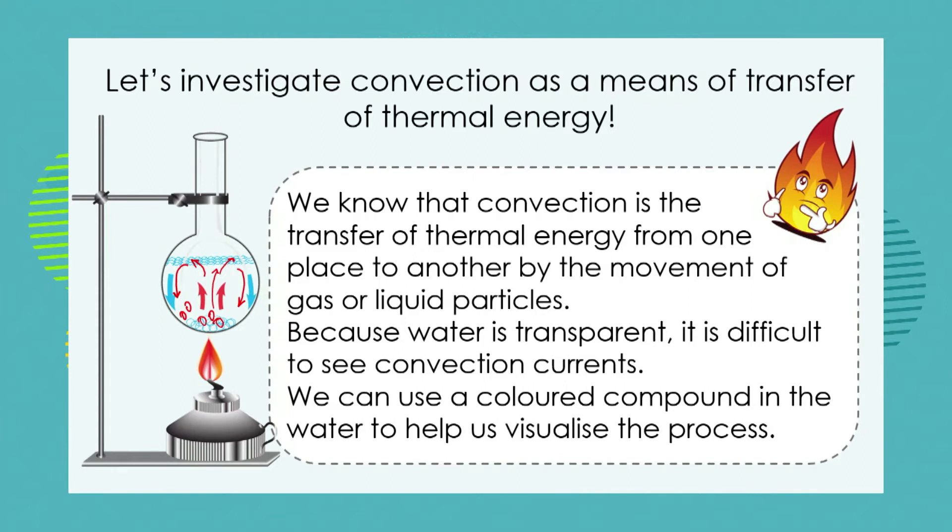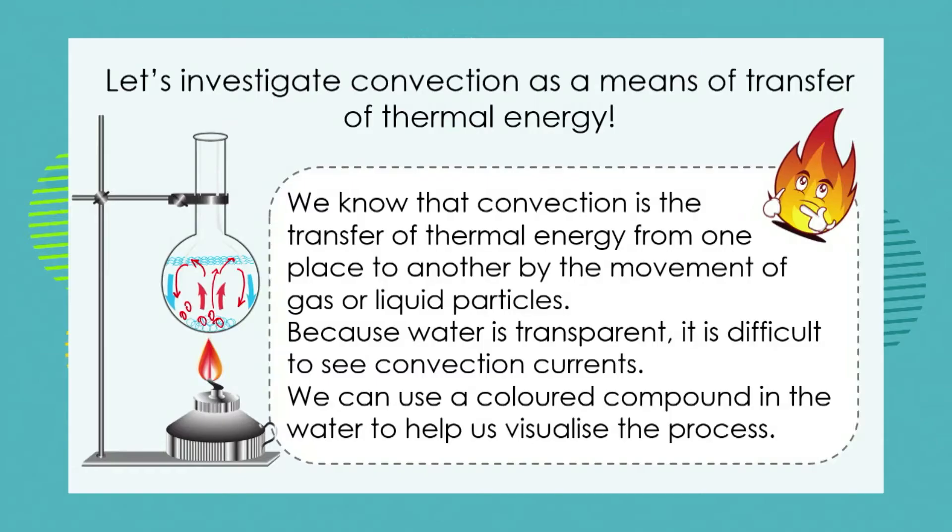Now in our last lesson we spoke about the mystery of the dancing peas and we showed how peas bounce up and down in boiling water because they're carried by these convection currents. So we know that convection is going to be the movement of the particles but it's often difficult to see these currents if you're looking at a liquid which is transparent or in the gas around us which we can see through. It's not an opaque substance.